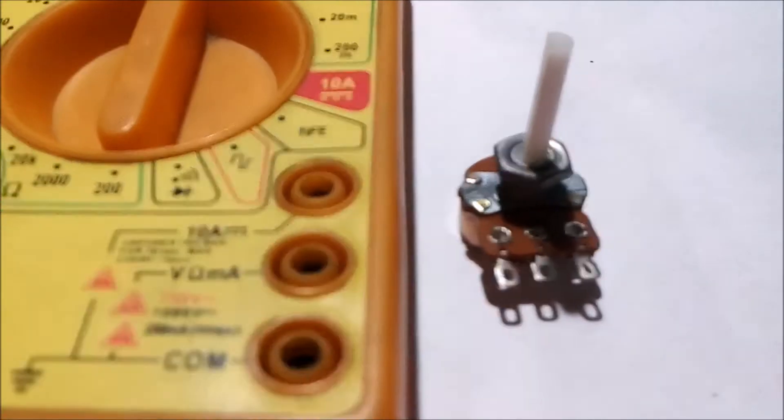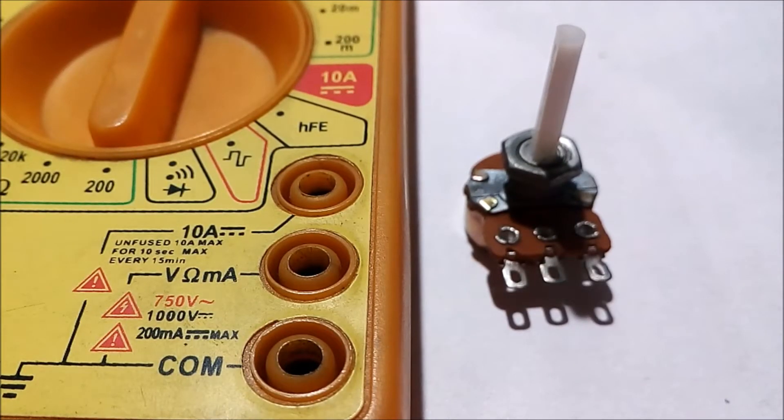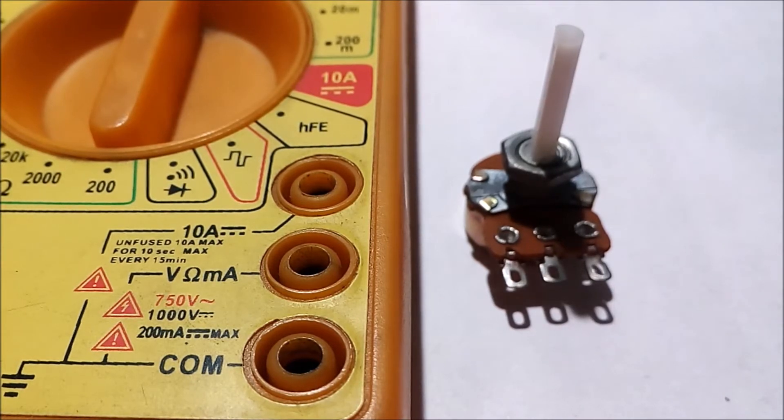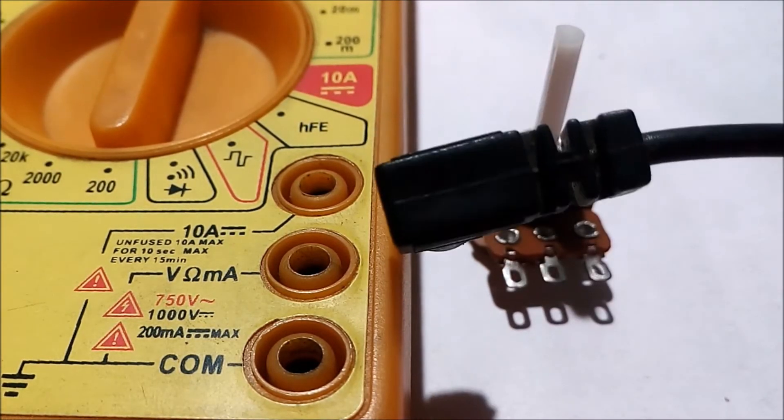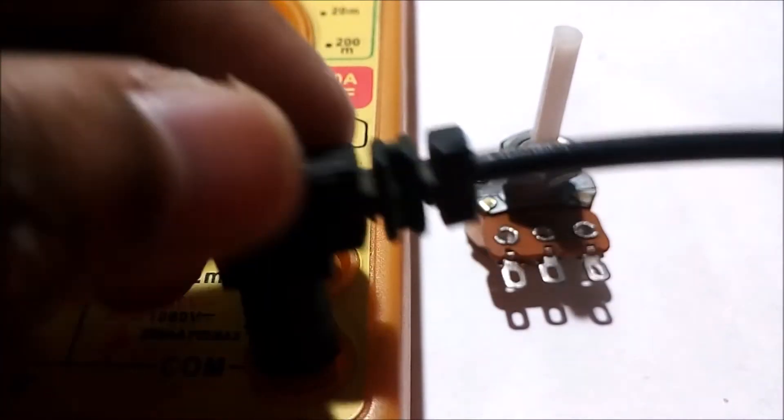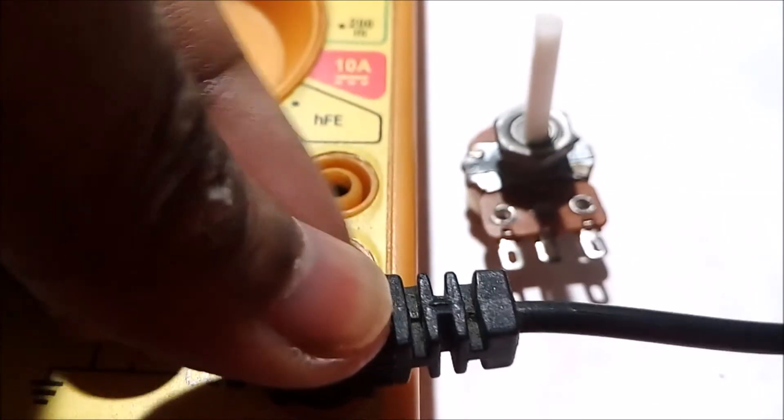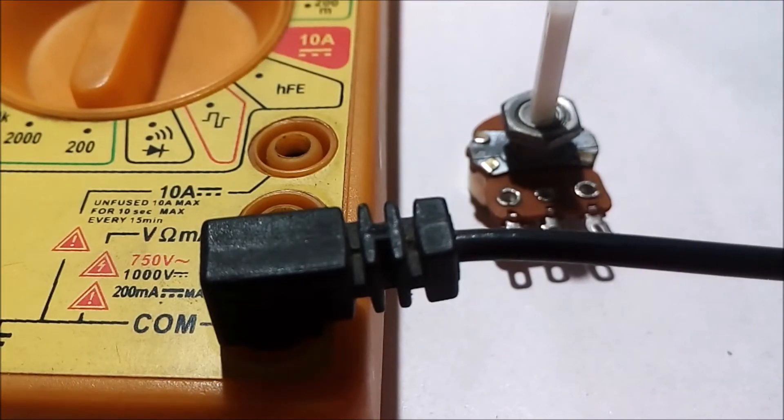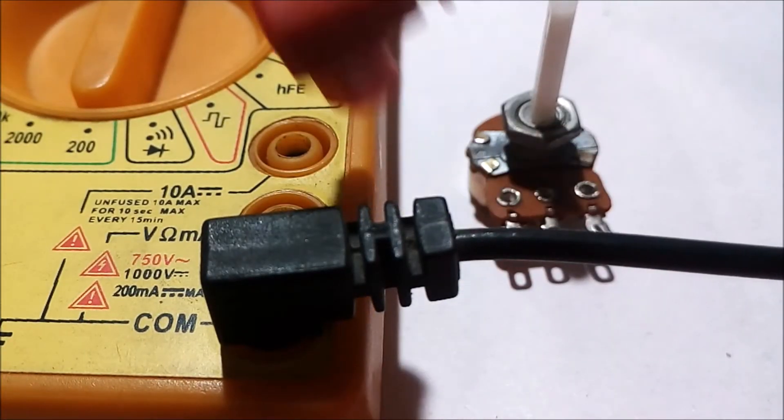These are the three sockets of multimeter in which we are going to place the black probe in the common socket. Let's put it. And now we are going to place the red probe to the voltage ohm milliampere socket.